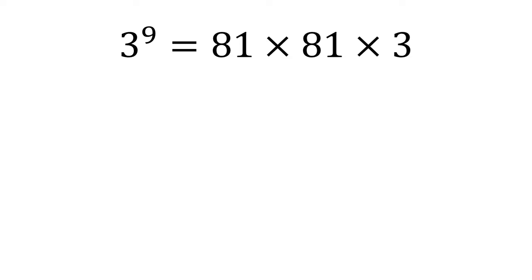Our problem now becomes 3 to the power of 9 is equal to 81 times 81 times 3. Still a little bit tricky, but we can use another trick to get 81 times 81.